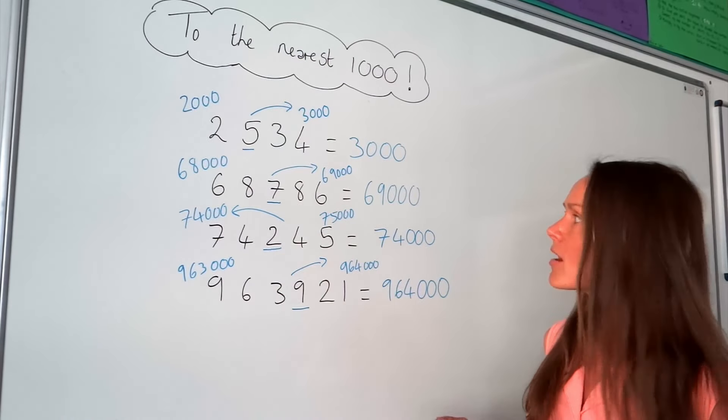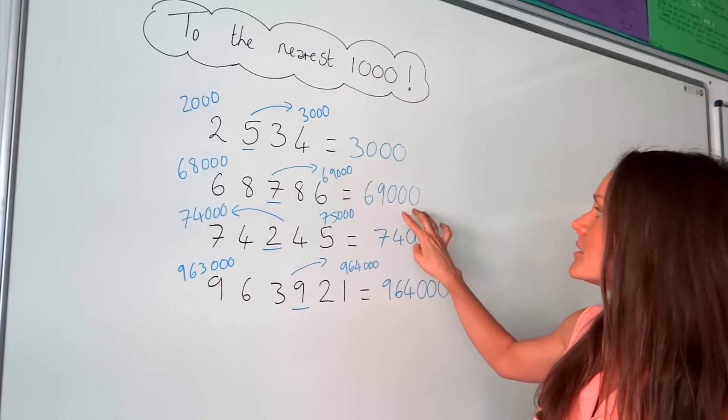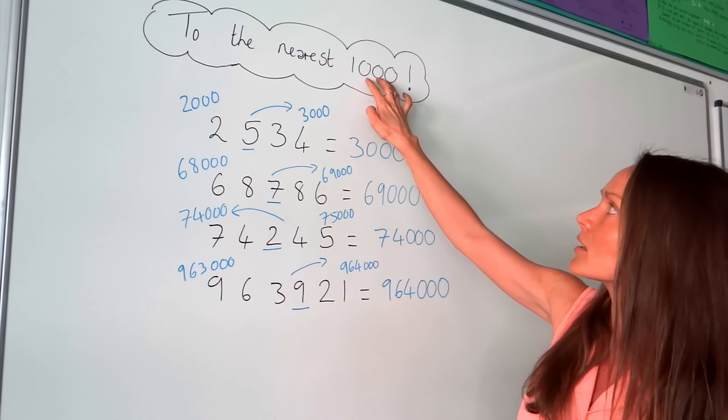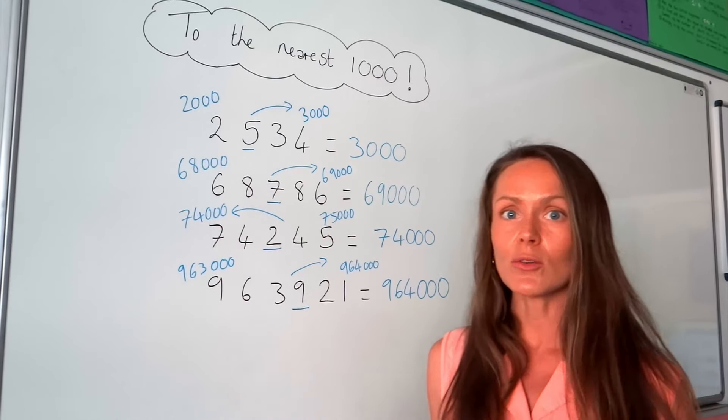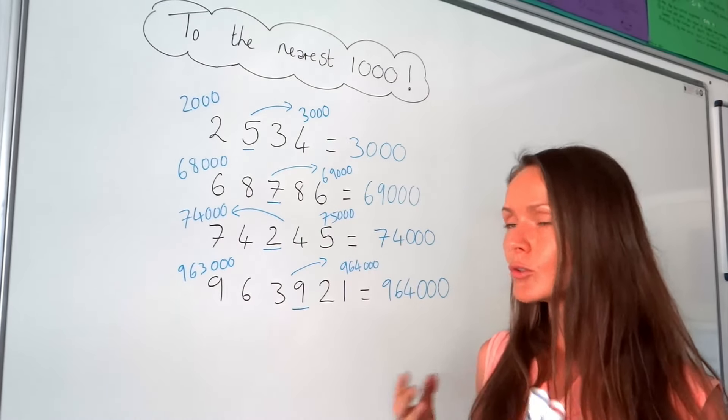Notice how in all of my answers, there are three zeros at the end of my number, just like the number 1,000. So if your answers don't have three zeros at the end, you know you've made a mistake.